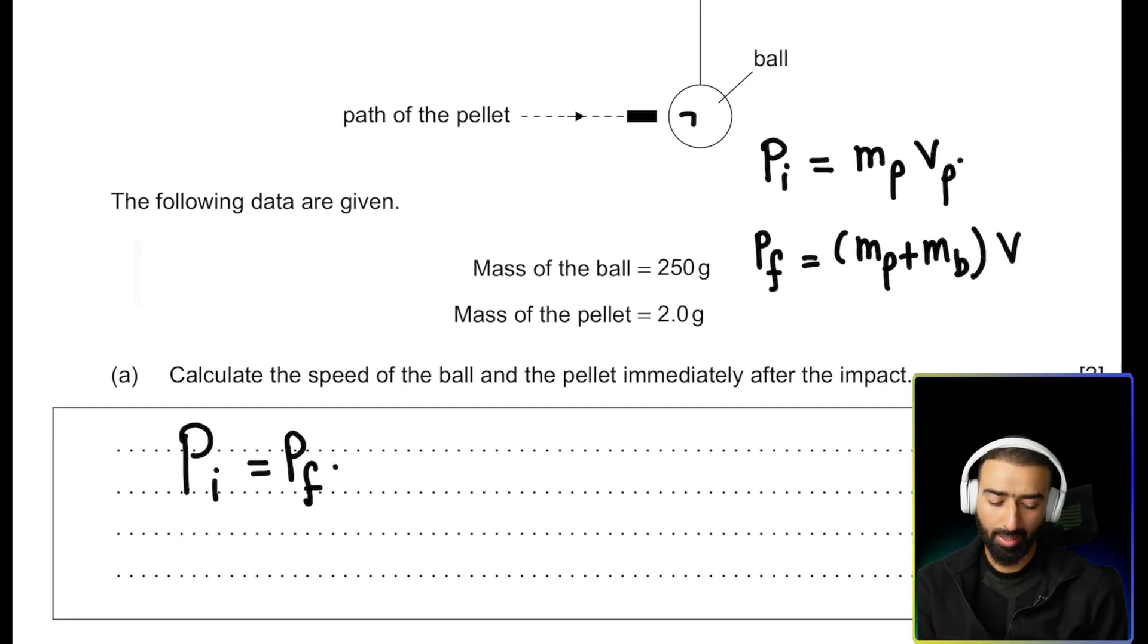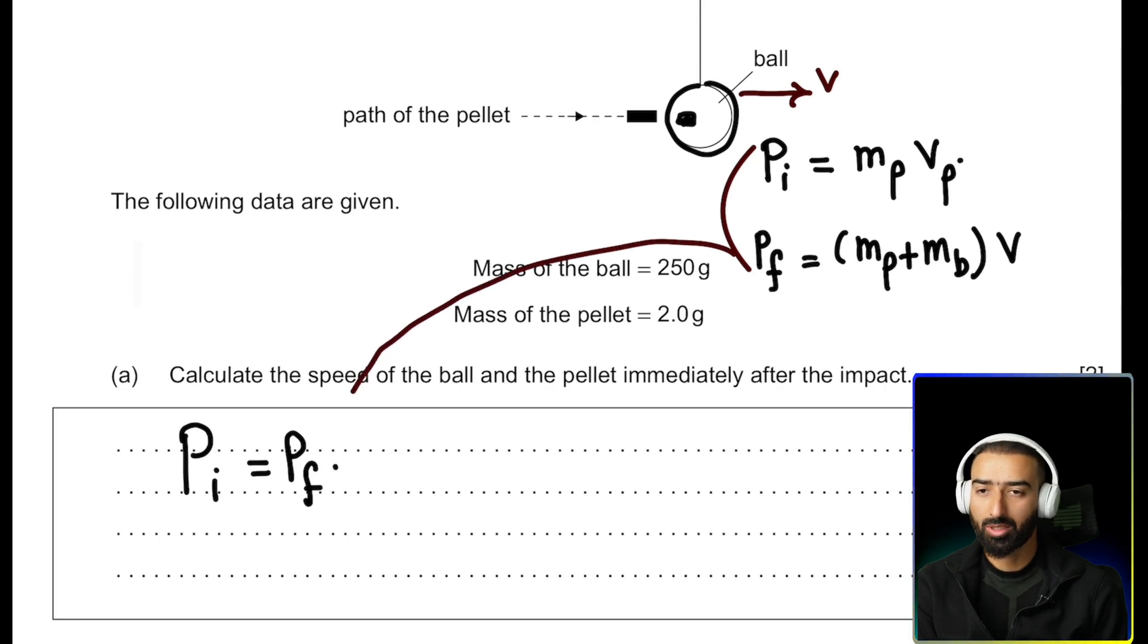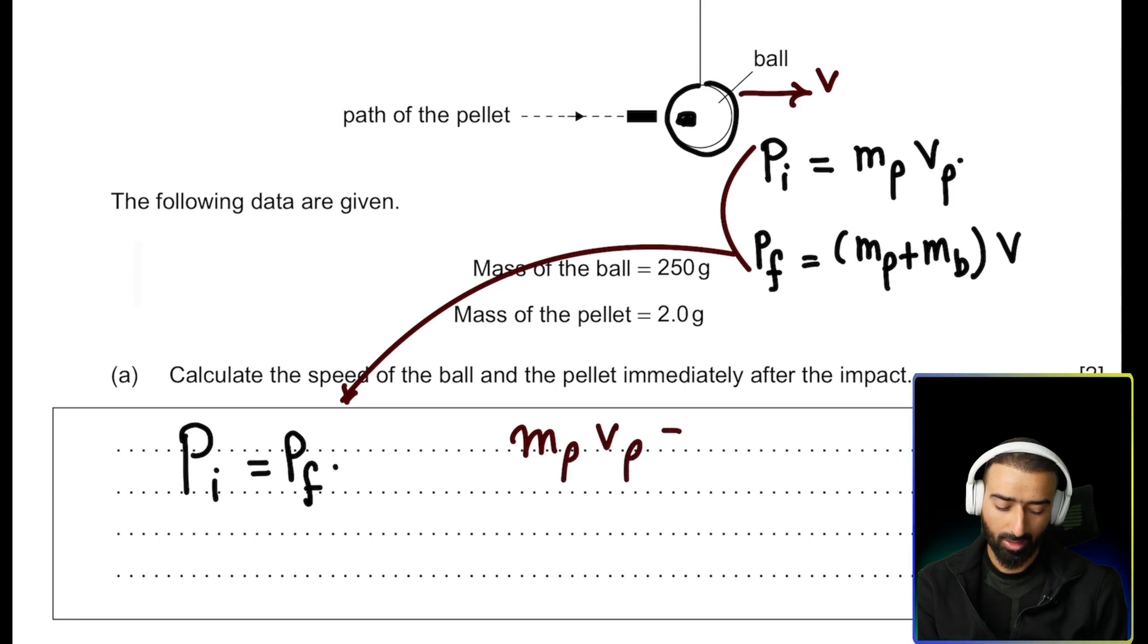So when the ball gets embedded, when the pellet gets embedded in the ball, this combined system is assumed to move with velocity v. And its momentum is going to be mass of the system. Now it's mass of pellet plus the ball times v. Okay, we can use both of these equations and substitute their values here. If we do that, we get mass of pellet, velocity of pellet equals mass of pellet plus mass of ball times v.